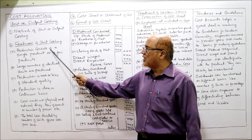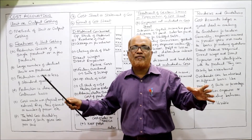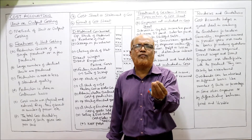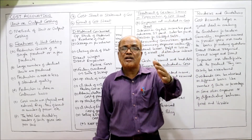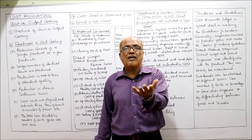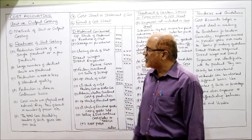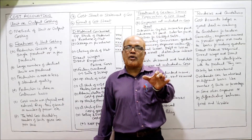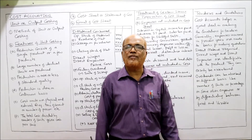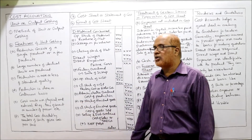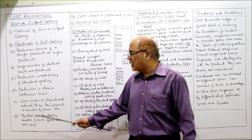The features of unit or output costing are: first, production consists of a single product or a few products — not many types. Second, a large number of identical products are produced continuously; the goods are homogeneous. Third, production is of more or less standard quality — all products are uniform with no differentiation. Fourth, production is done on a continuous basis with no interruption.